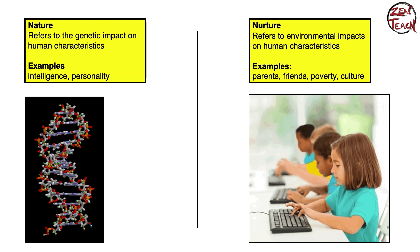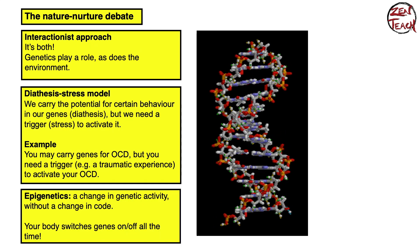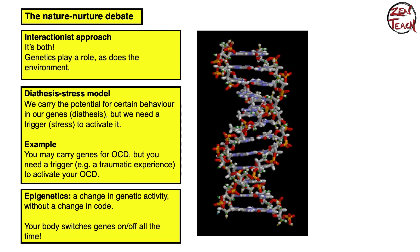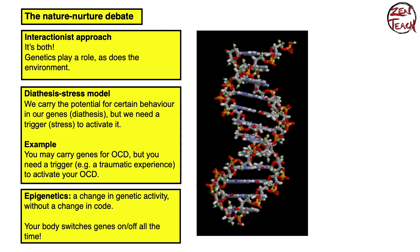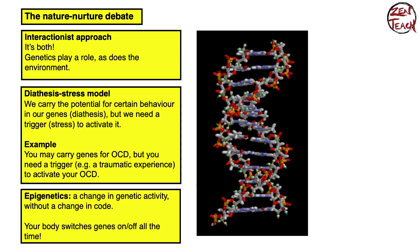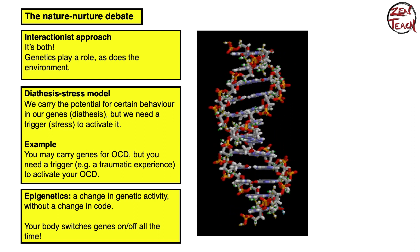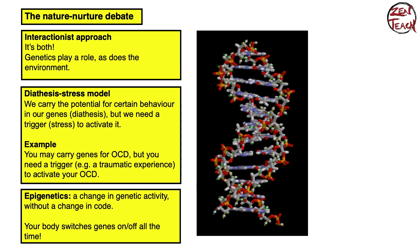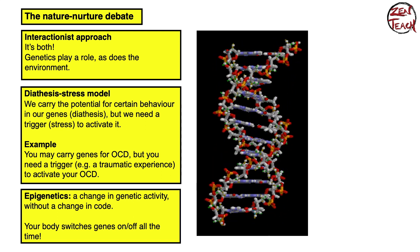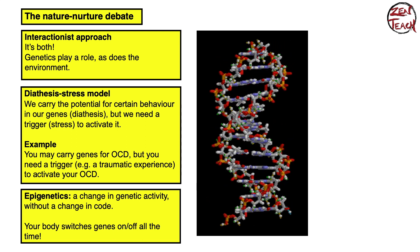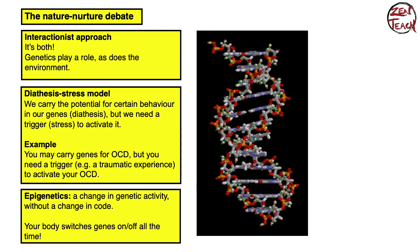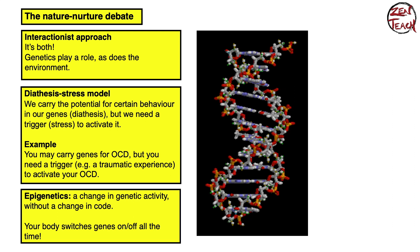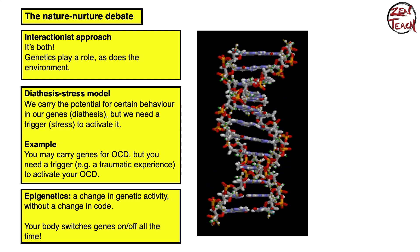Instead of arguing which one is right or wrong, the interactionist approach says both have an impact — genetics play a role and the environment plays a role as well. It's obvious that we have to combine these two factors. The diathesis stress model is an interesting one because it argues that genes can be dormant and only activated by certain events.